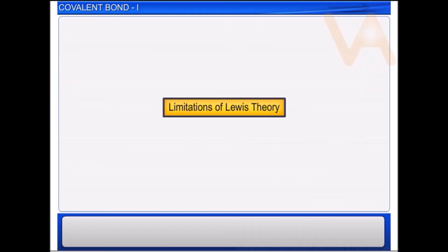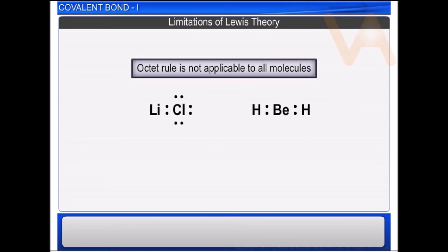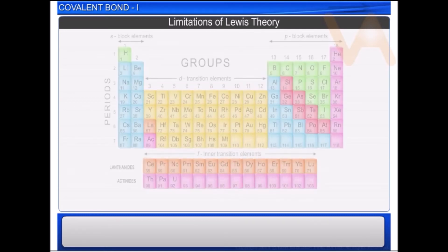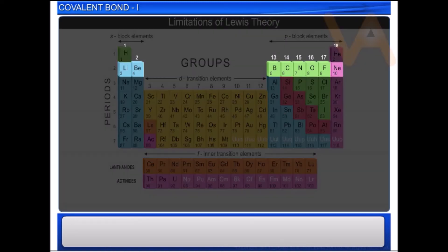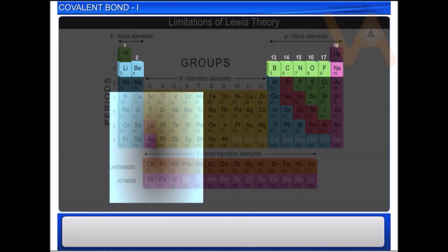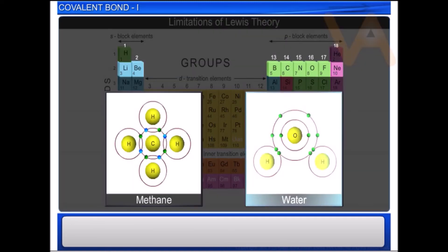Now let's move on to limitations of Lewis theory. Though the octet rule is simple, it is not applicable to all molecules. It is mainly applicable to organic compounds and compounds formed by second period elements such as methane and water.